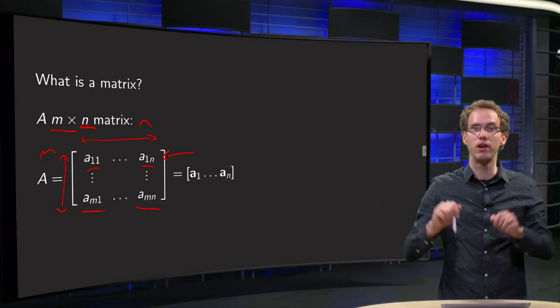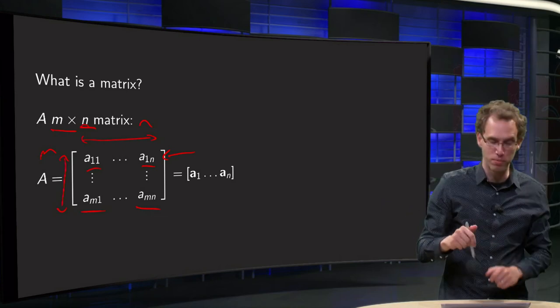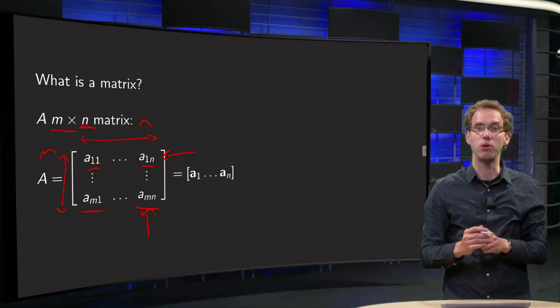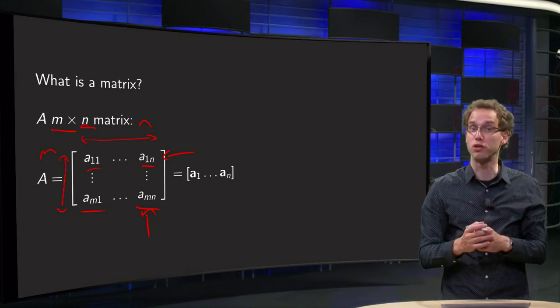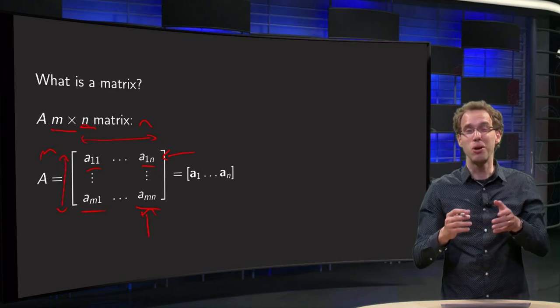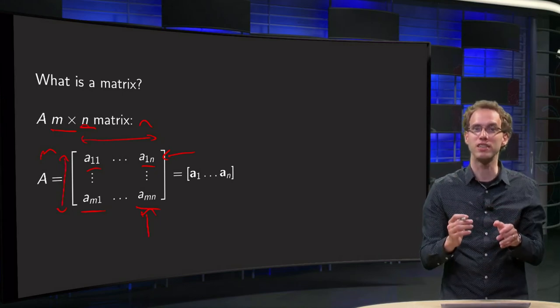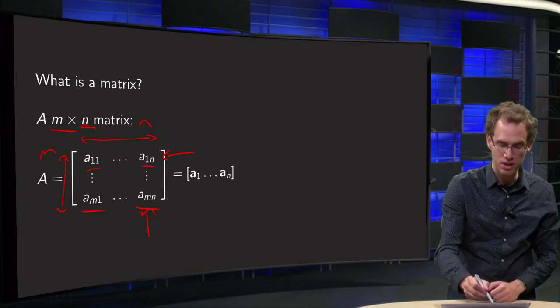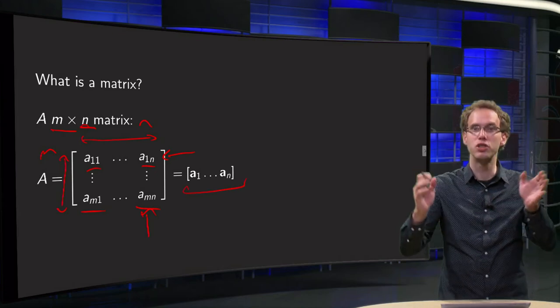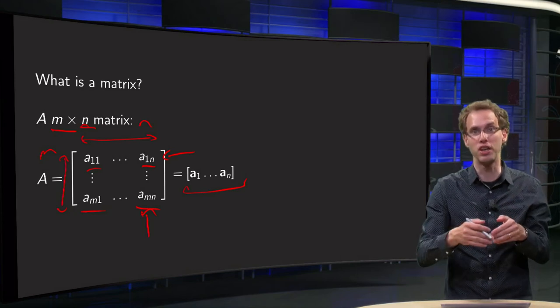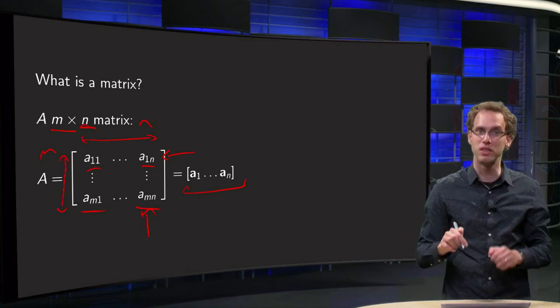The horizontal array of numbers are called rows of the matrix and here the vertical ones are called columns. Of course it's quite cumbersome to write a matrix like this because it takes a lot of room. So often the matrix is denoted like this as a sequence of its columns. So a1 is the first column of the matrix A, a2 the second one up till an.